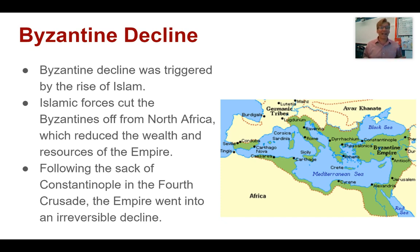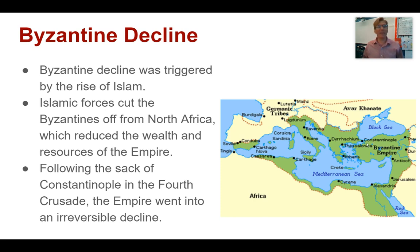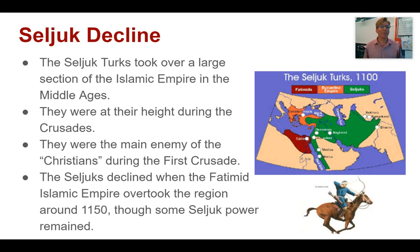Following the sack of Constantinople and the Fourth Crusade, which is something that is mostly the Europeans' fault — we can blame Venice for it — they come over organizing a crusade and say, this city's rich, let's just take this one instead. That really causes a lot of problems for Constantinople as well.